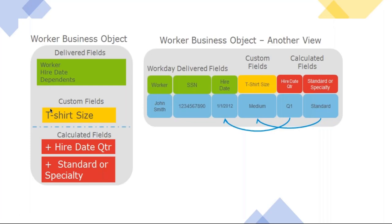For example, a custom field might be a compensation plan your client tracks that Workday doesn't deliver natively — so the functional team configures it as a custom object in Workday. Calculated fields, on the other hand, are built using delivered fields: for example, from hire date you extract the quarter, or from dependents you filter only those of a particular type. Your report will always be a permutation and combination of delivered fields, custom fields, and calculated fields.